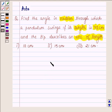So let this be a pendulum which swings in this manner, and this is an arc of a circle. Let its length be denoted by capital R. And we are given that the length of the pendulum is 75 cm.